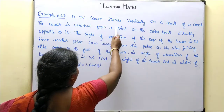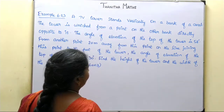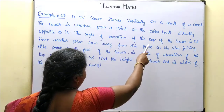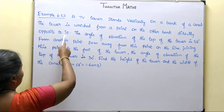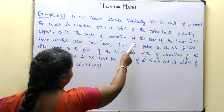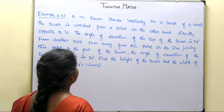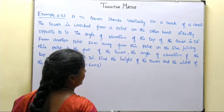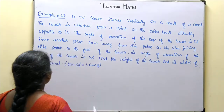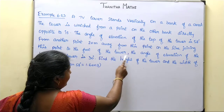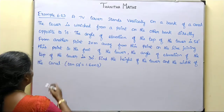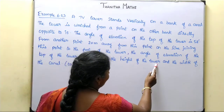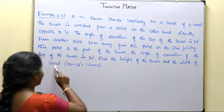A TV tower stands vertically on a bank of a canal. The tower is watched from a point on the other bank directly opposite to it. The angle of elevation of the top of the tower is 58 degrees. From another point 20 meters away from this point on the line joining this point to the foot of the tower, the angle of elevation of the top of the tower is 30 degrees. Find the height of the tower and the width of the canal.